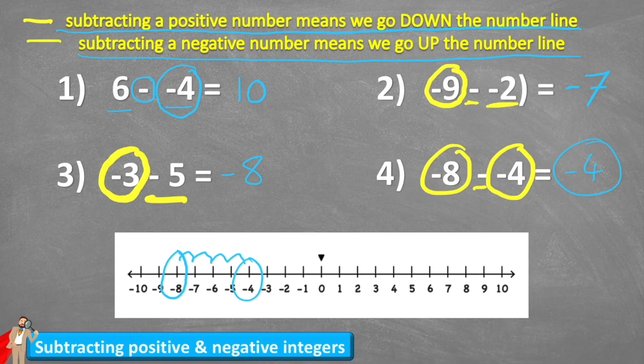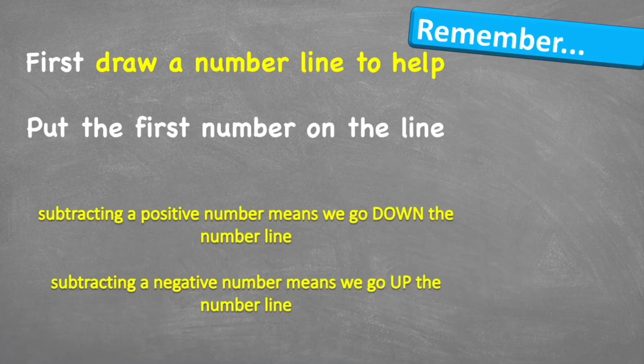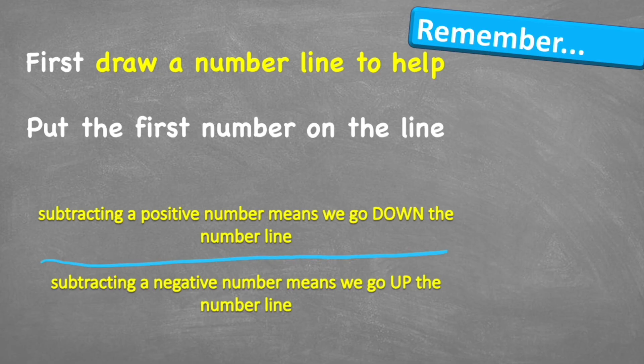Pretty tricky, right? A little bit confusing to think about. But basically if we are subtracting a negative number, we actually end up adding. So let's think about things to remember in this lesson. First, draw a number line to help you — this will help you visualize what exactly you're doing. Then put the first number on the line before following the rule for the second number. The rules are: subtracting a positive number means we go down the number line, and subtracting a negative number means we go up the number line.